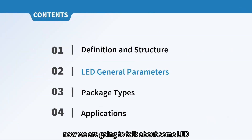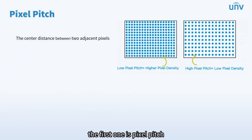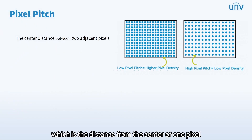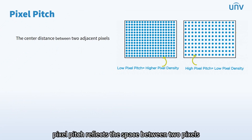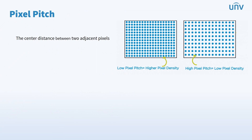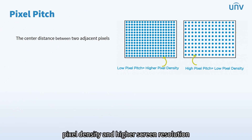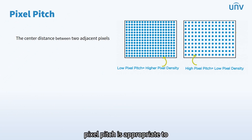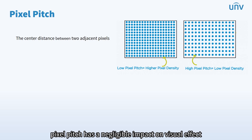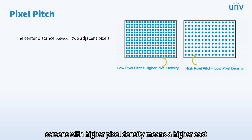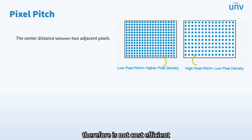Now we are going to talk about some LED general parameters. The first one is pixel pitch, which is the distance from the center of one pixel to the center of an adjacent pixel, measured in millimeters. Pixel pitch reflects the space between two pixels. A smaller pixel pitch means less space between pixels, which stands for a higher pixel density and higher screen resolution, and will bring better visual effects. However, it does not mean that a smaller pixel pitch is appropriate to all application scenarios. When viewing from a distance, pixel pitch has a negligible impact on visual effect. Also, screens with higher pixel density mean a higher cost, therefore it is not cost-efficient.